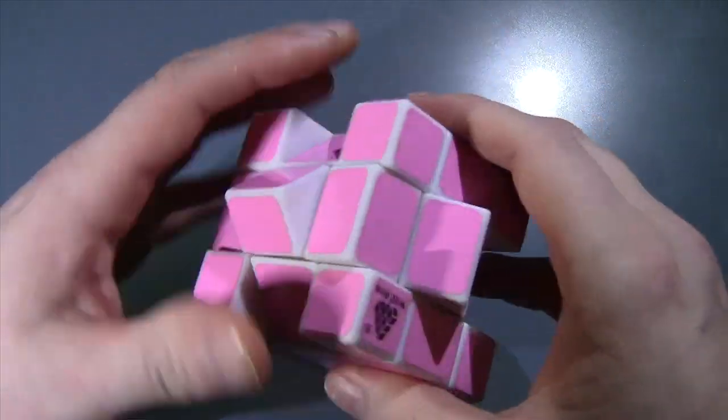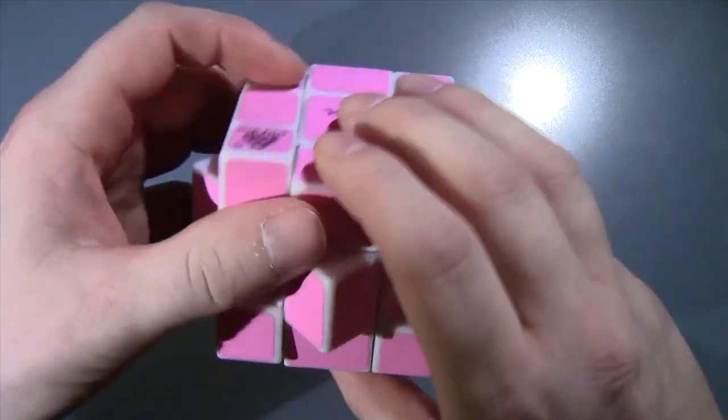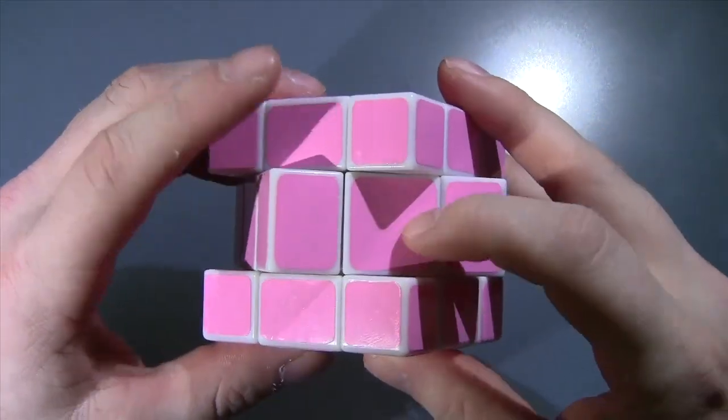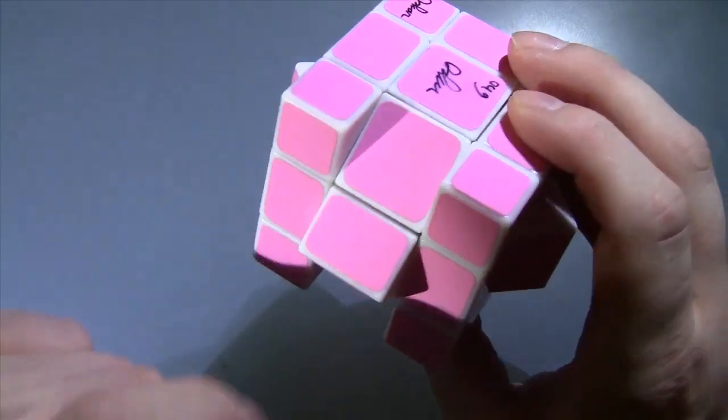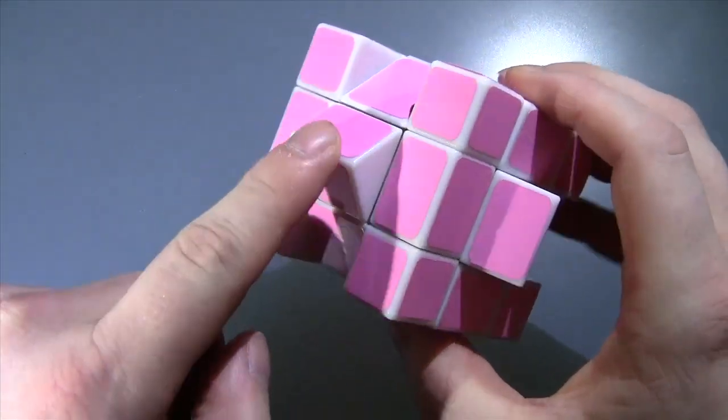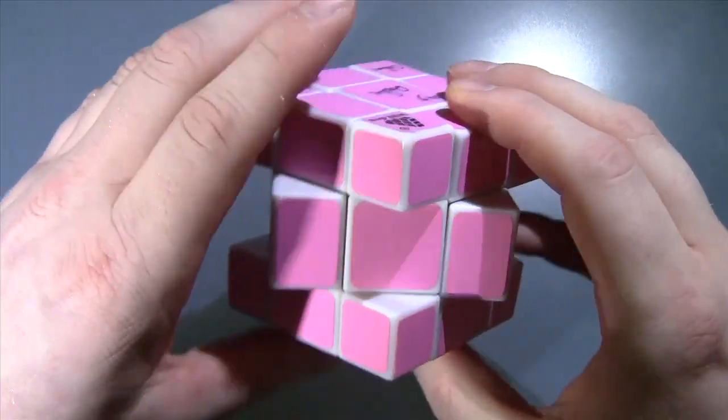The way it works is that the edges are interchangeable with the centers. If I go like this, now that center is where the edge is because it's next to another center, and this edge is next to another edge. So you can swap those two.